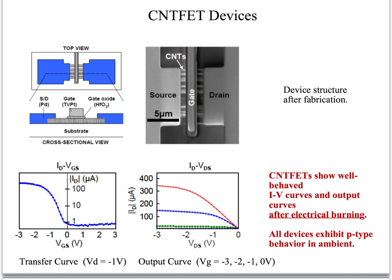This is the view of a typical carbon nanotube field-effect transistor fabricated in our lab. From the SEM image, you can see the aligned carbon nanotubes under the gate. We usually use titanium-palladium metals for the source and drain, because titanium forms very good adhesion and palladium forms ohmic contacts to the nanotubes. We use a titanium-platinum combination for the gate to adjust the threshold voltage.